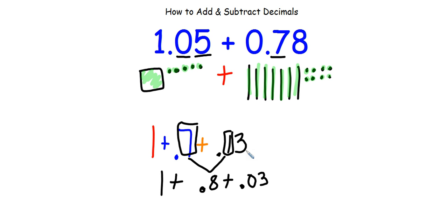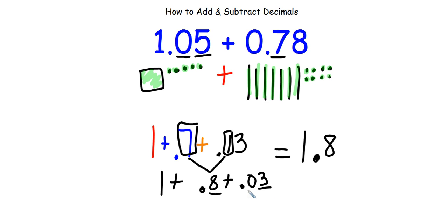I can put all this together in the proper place values and end up with 1 decimal point, the 8 in the first spot after the decimal, and the 3 in the second spot. So my answer to 1 and 5 hundredths plus 0.78 is 1 and 83 hundredths.